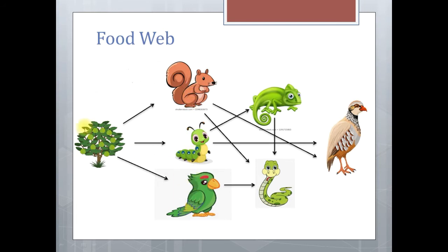During this observation he found that squirrel, caterpillar, and parrot all of them find their food from that guava tree. Then this squirrel is eaten by the rat snake and partridge. This caterpillar is eaten by the rat snake. Chameleon is eaten by the rat snake and the partridge. This diagram shows the interaction between plants and animals and interactions between animals and animals as well.